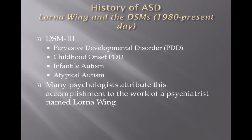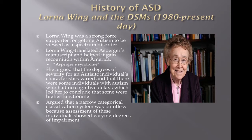Then we move on to Lorna Wing and the current DSMs. The DSM-3 came out in around 1980 and was the first one to actually define autism — it had pervasive developmental disorder, childhood onset PDD, infantile autism, and atypical autism. A lot of this new definition of autism is due to the work of Lorna Wing. Lorna Wing was a strong force behind the new Autism Spectrum Disorder; she helped translate Asperger's work and helped it gain popularity within America in the 1980s. She argued that the degrees of severity for an autistic individual's characteristics varied and that some individuals with autism had no cognitive delays, leading her to conclude that some were higher functioning. She said it was almost impossible to have a categorical system for individuals with autism because of the varying degrees of impairment, and therefore it was pointless to have such a system.